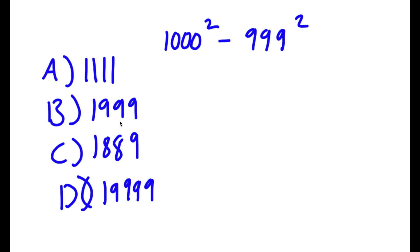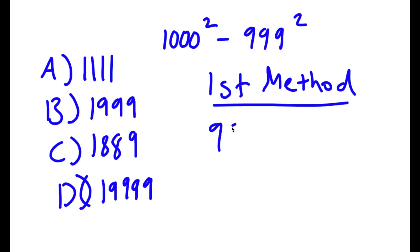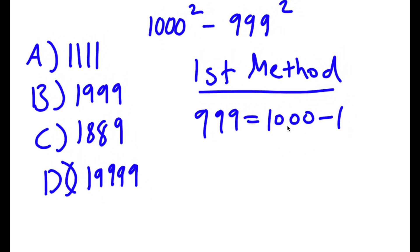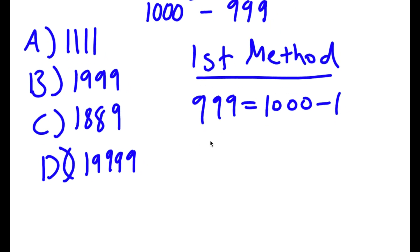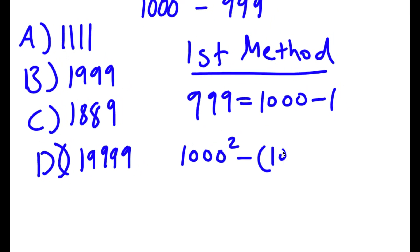For our first method, I'm going to note that 999 is equal to 1,000 minus 1. So if I replace 999 with 1,000 minus 1, I get 1,000 squared minus (1,000 minus 1) squared.